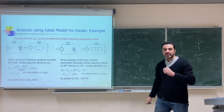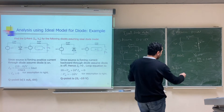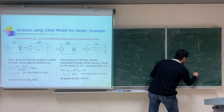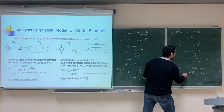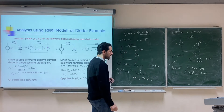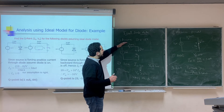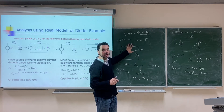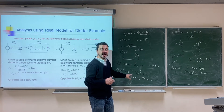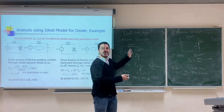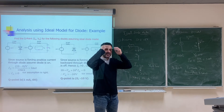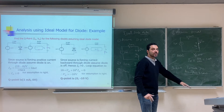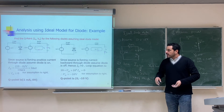Now we check. For a diode assumed to be on, we check that the current is greater than or equal to zero. We found I_D = 1mA, which is ≥ 0, so our assumption is correct and this is the solution. An important point: if you solve based on a wrong assumption, completely forget all values calculated under that assumption — they are all wrong. Start a completely new solution from the beginning.